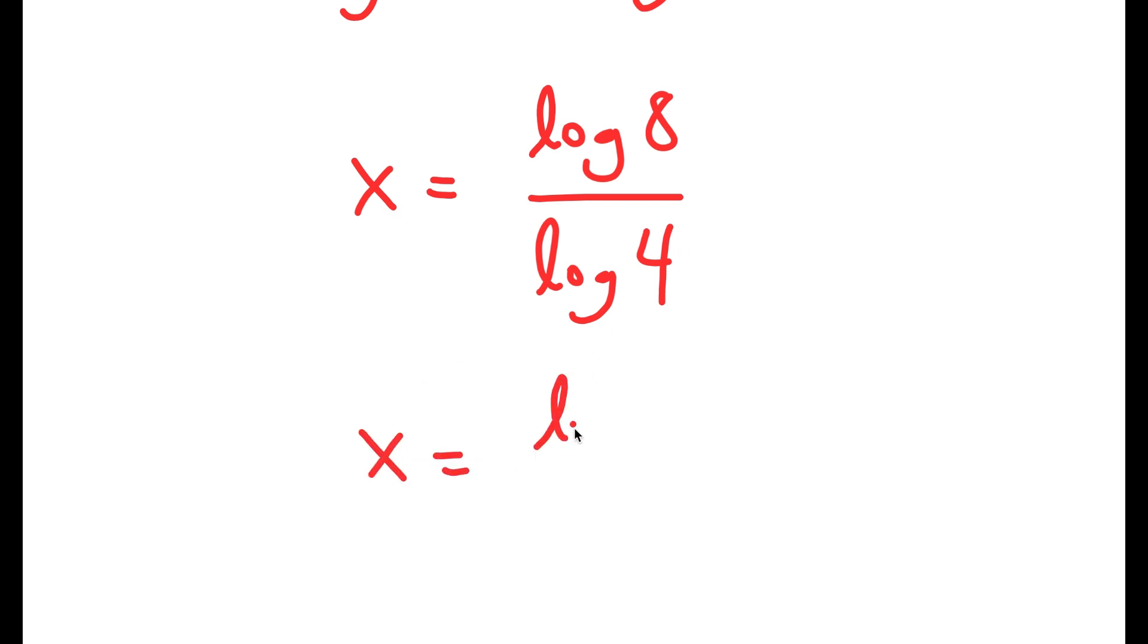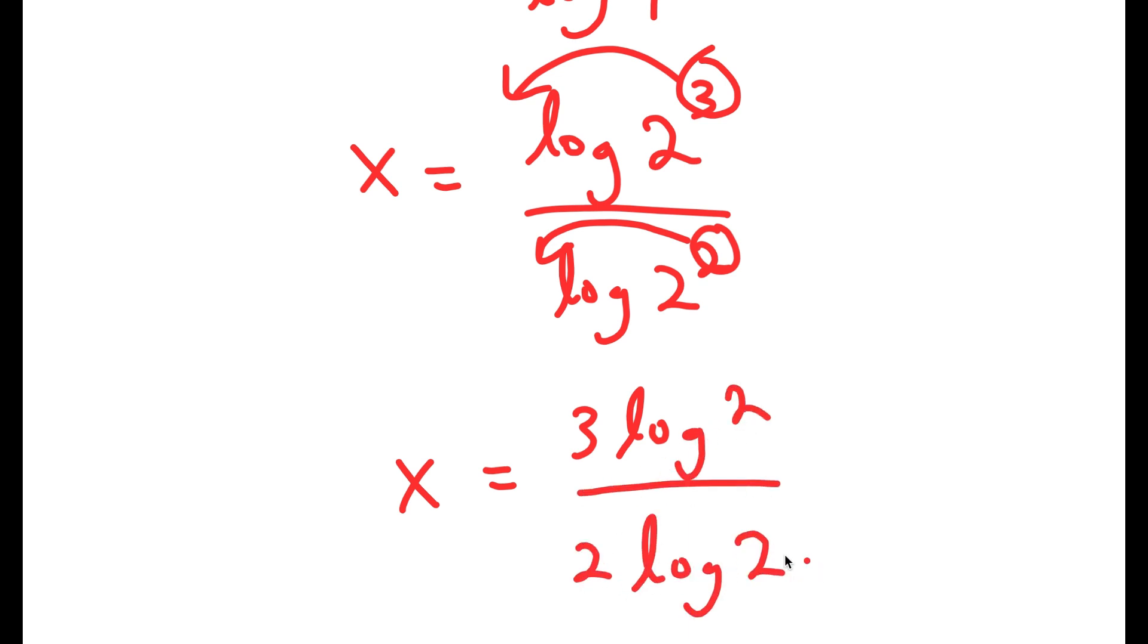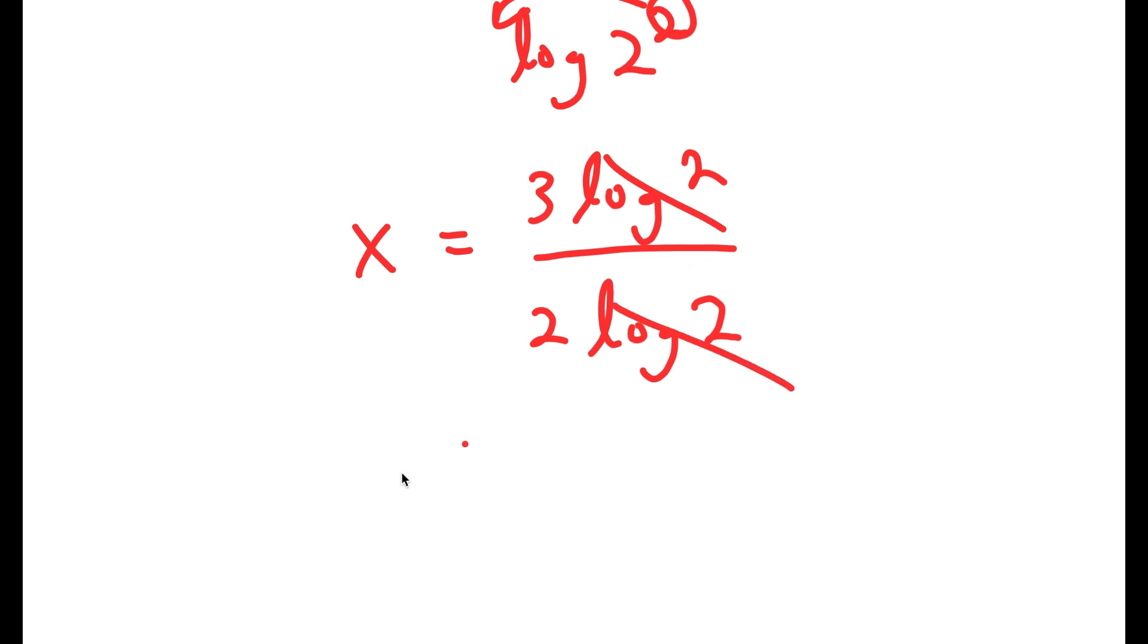And now log of 8, I can rewrite as log of 2 to the power of 3. Log of 4, I can rewrite as log 2 squared. And I can move 3 to the front, move 2 to the front. So I get x is equal to 3 times log 2 over 2 times log 2. I can cancel these two log 2s out. So I get x is equal to 3 over 2.